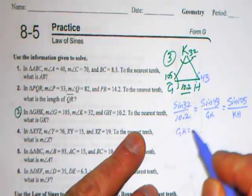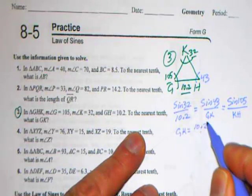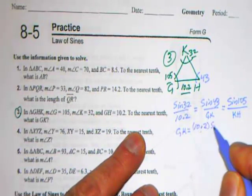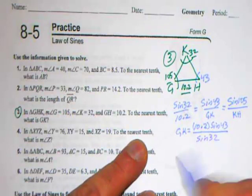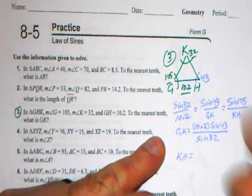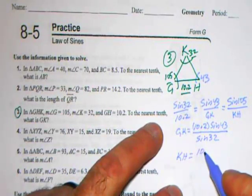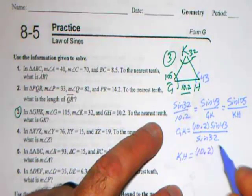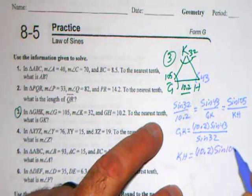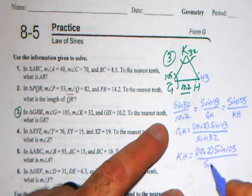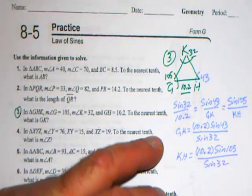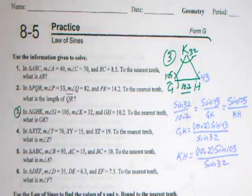We're going to cross-multiply and simplify. GK is going to be 10.2 times the sine of 43 divided by sine 32. Might as well go ahead and go for KH. KH is going to be 10.2 times sine 105 divided by sine of 42.